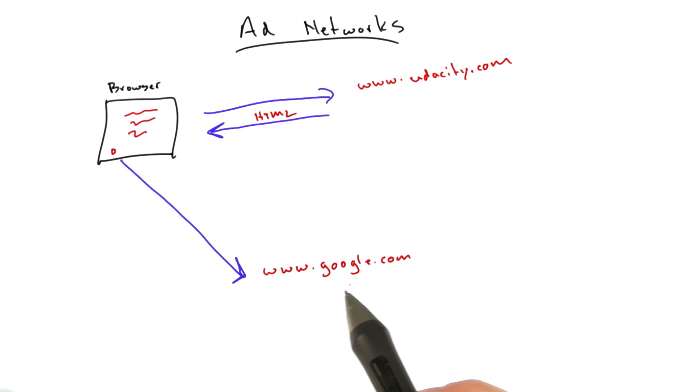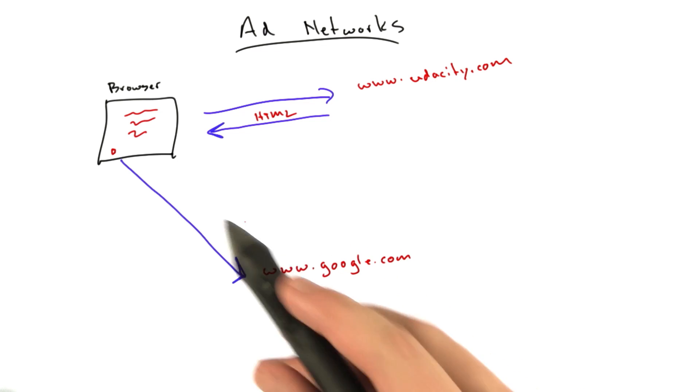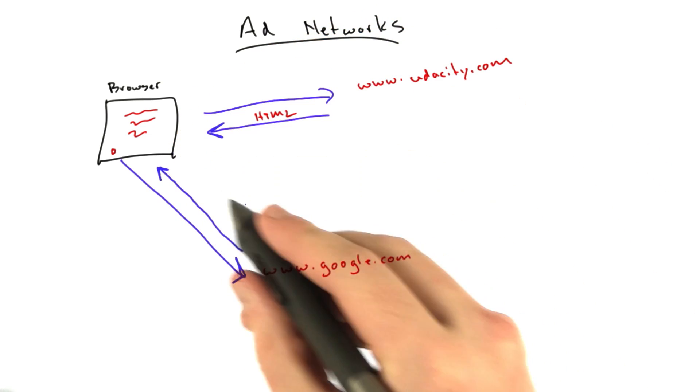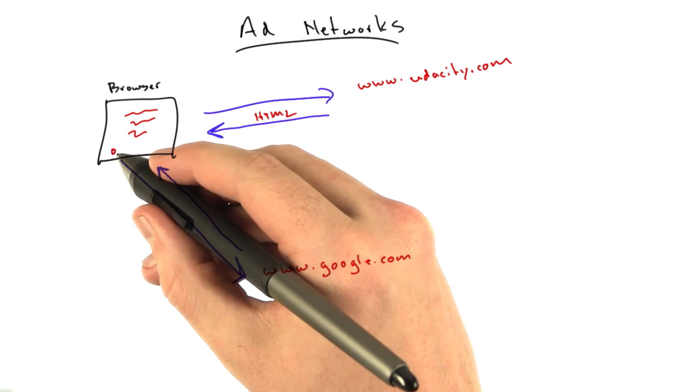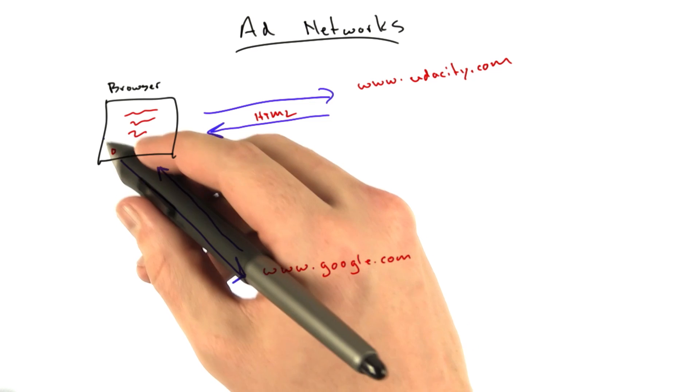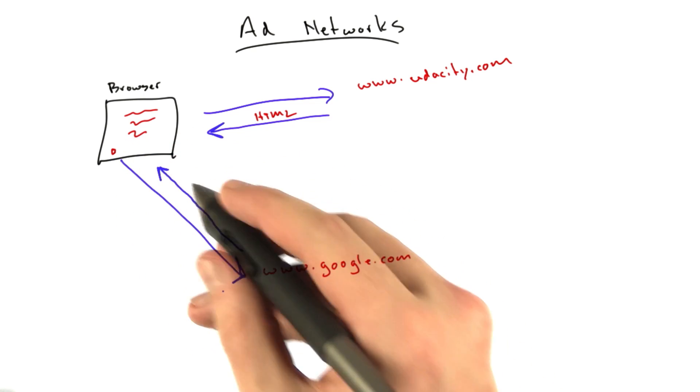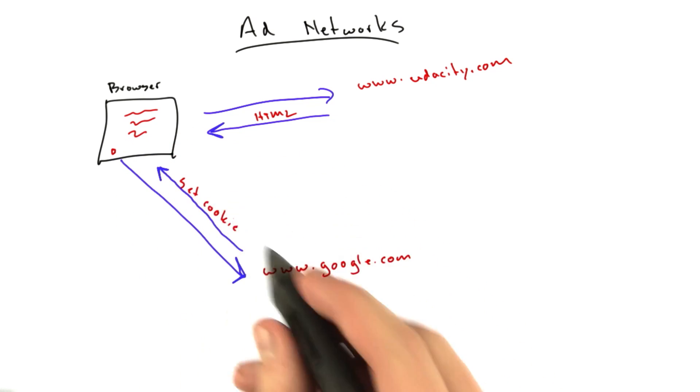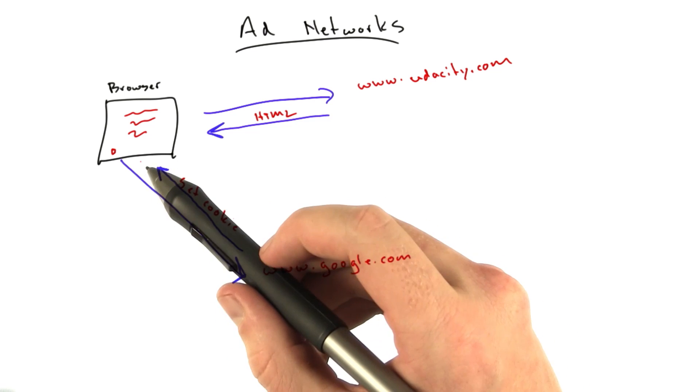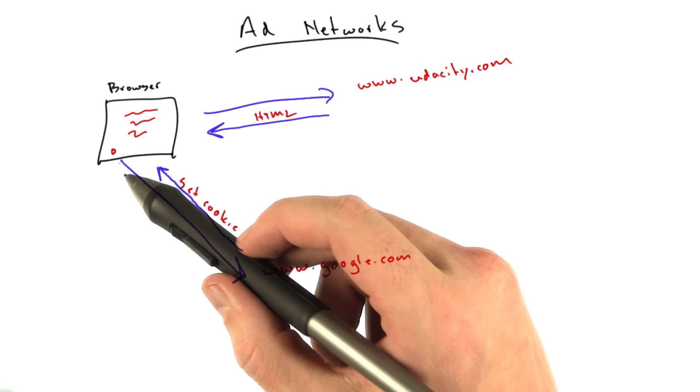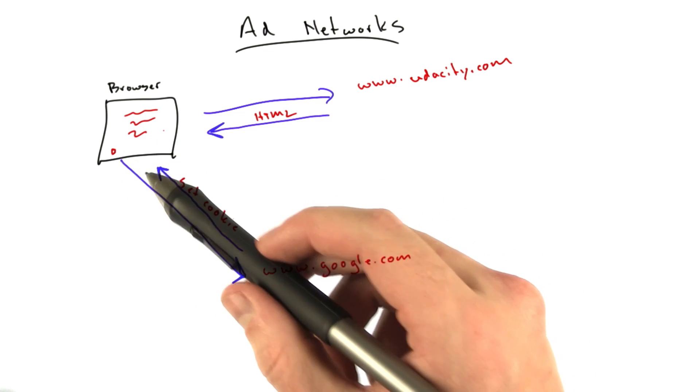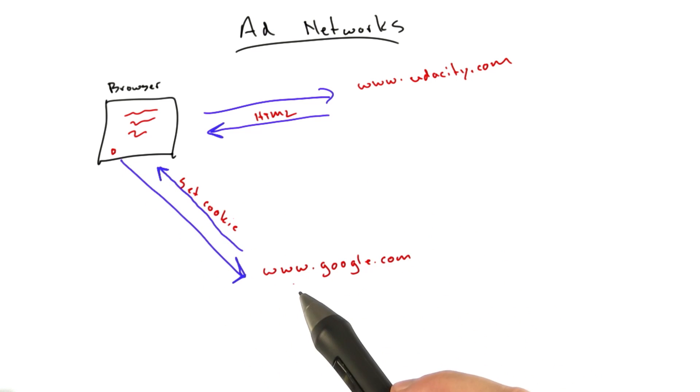And because google.com has an analytics package that a lot of websites use to track traffic and what users are doing and that sort of thing. And google.com may respond with the actual pixel image. This might be an image source equals Google something. And this may have a cookie on there that will assign you some ID so that when you come back to the website again and you request this pixel again, Google can track that you are the same user coming back.